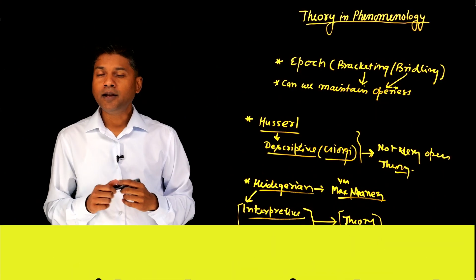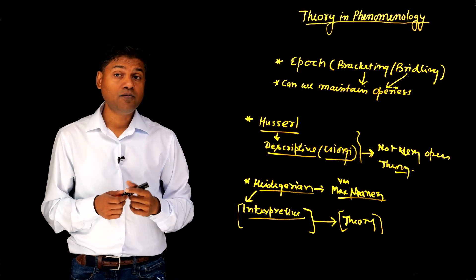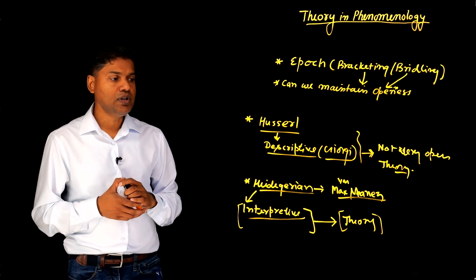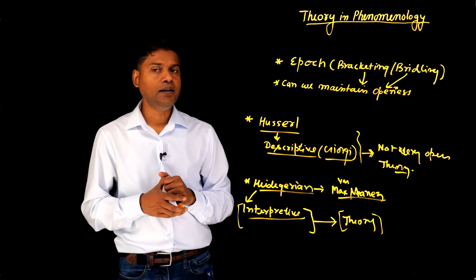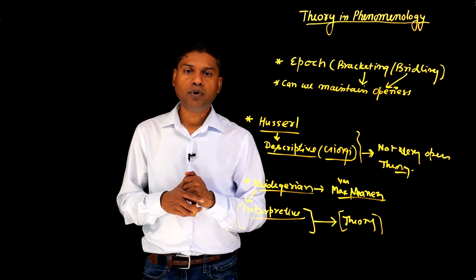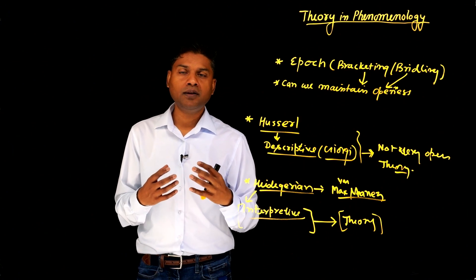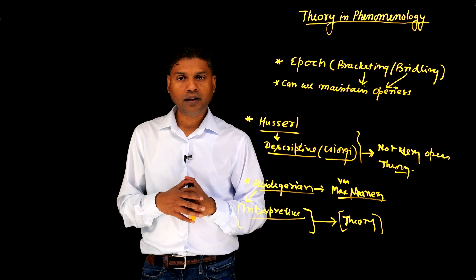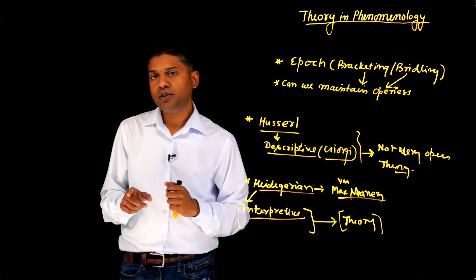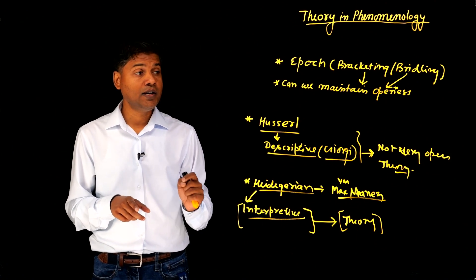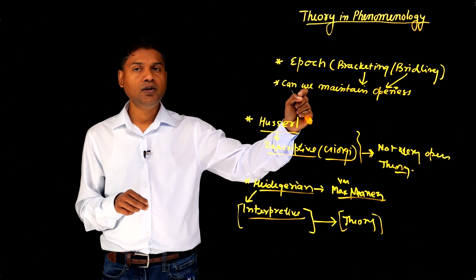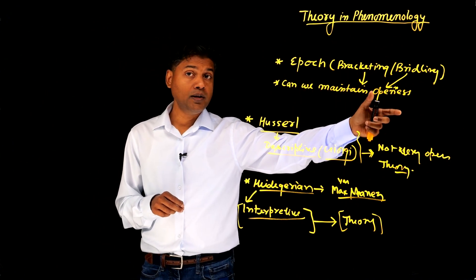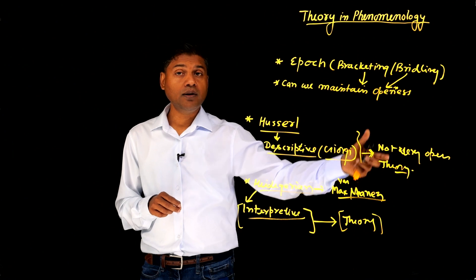Based on what I have read up to now in phenomenology, like some really good phenomenologies, using a theory is not highly encouraged. But I think I can see now that there is a sense of openness to use a theory. However, as I said previously, the emphasis is again to maintain the tradition, not compromise with bracketing, bridling, maintaining openness if you are using a theory.